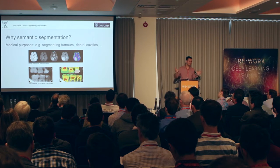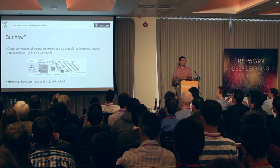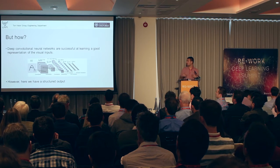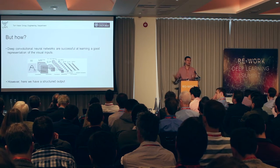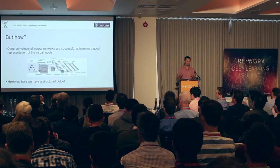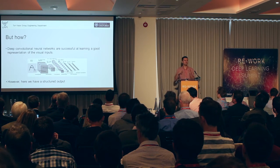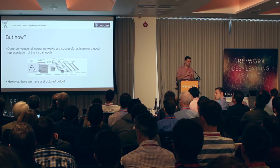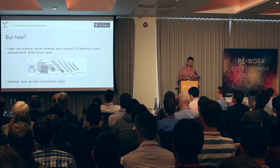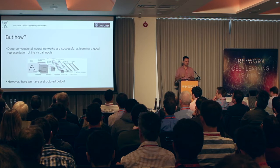We have seen that segmentation is useful for some things. Now the question is how do we actually perform semantic segmentation? Of course, we start from convolutional neural networks because they are great at learning good representations of images. But we have to keep in mind that semantic segmentation requires a very particular kind of output. The output is structured, and therefore convolutional networks by themselves may not be enough to get good performance.